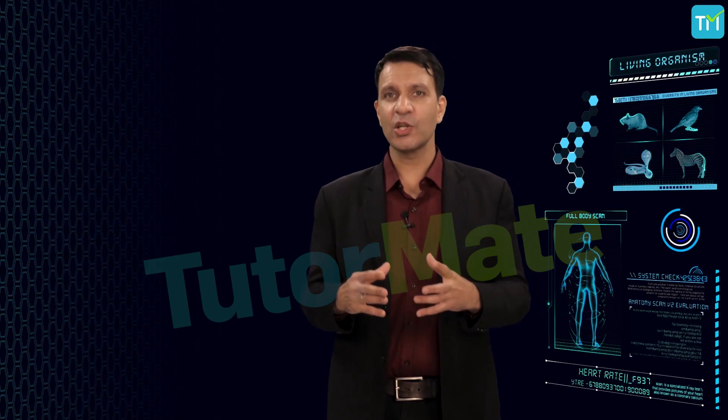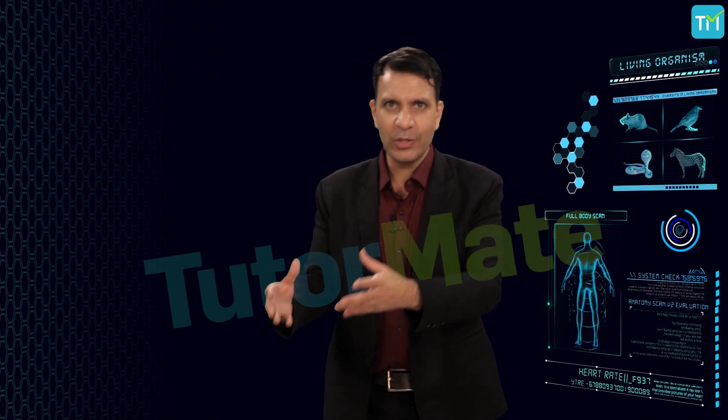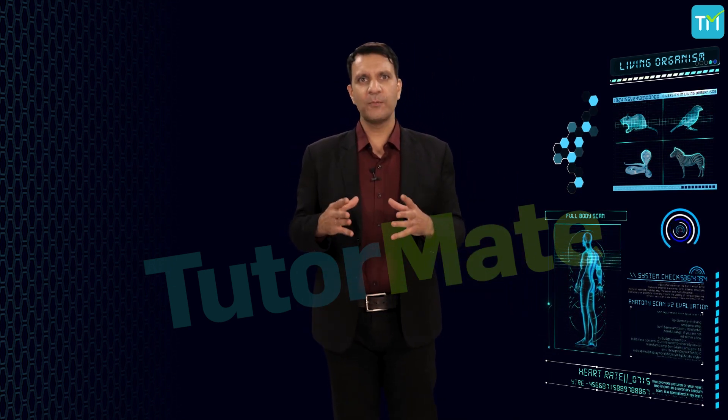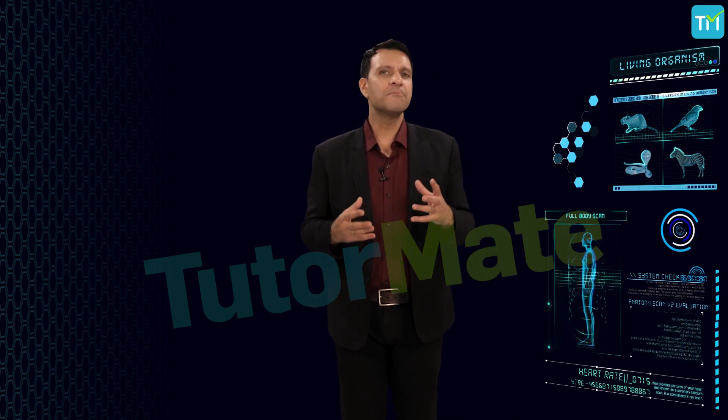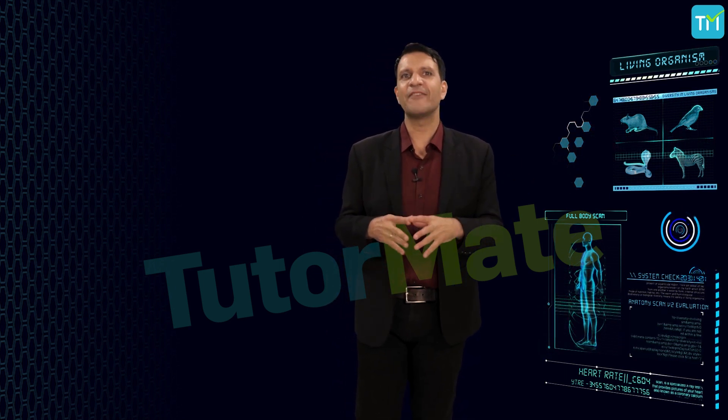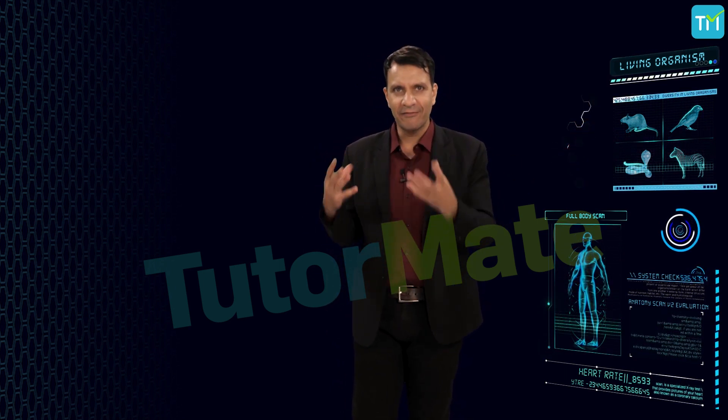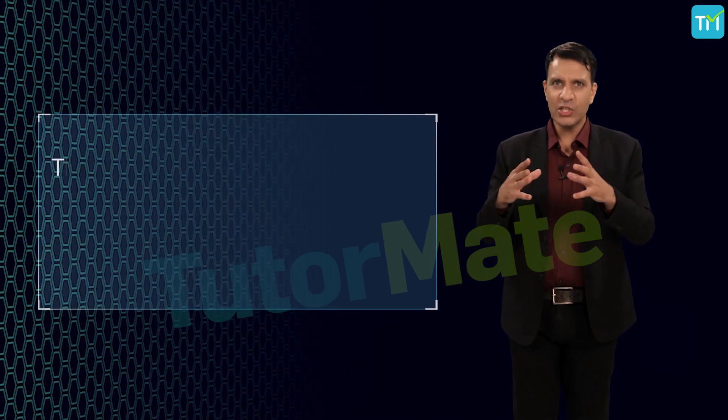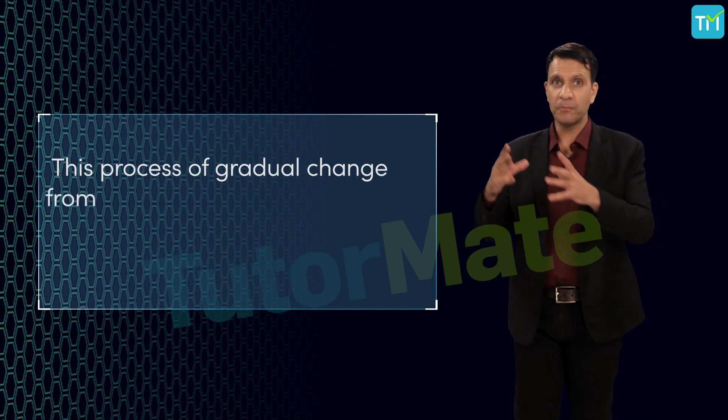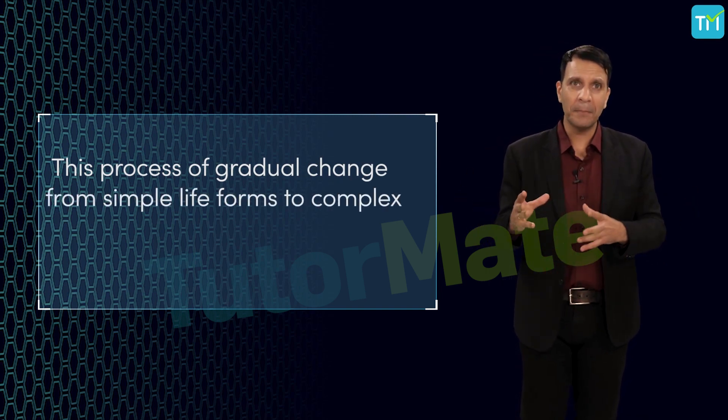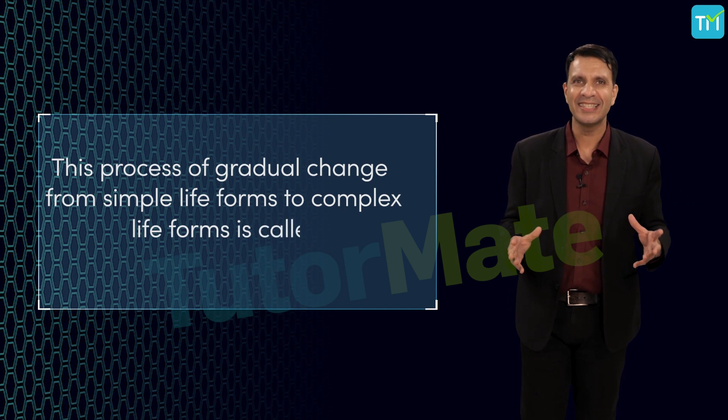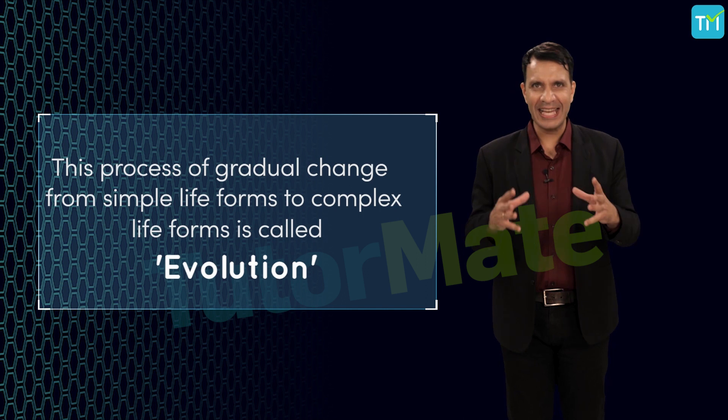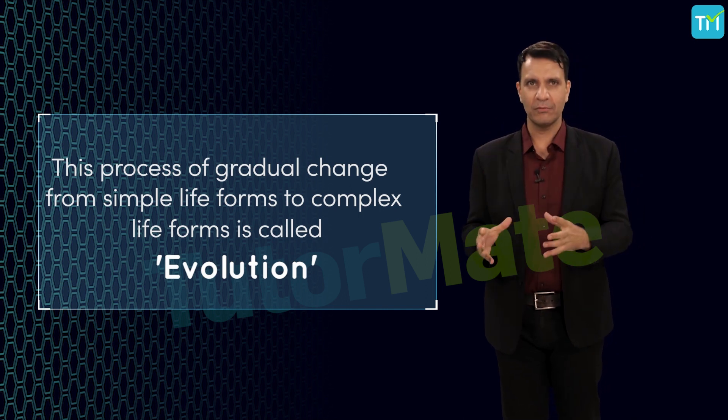The ancestral forms were simple and are called primitive. Primitive organisms have evolved into advanced organisms which are more complex. This process of gradual change from simple life forms to complex life forms is called evolution. And this is how evolution has laid an elementary stone or pathway for classification.